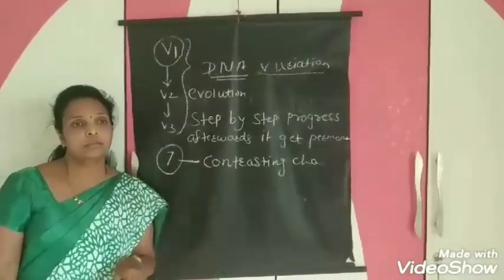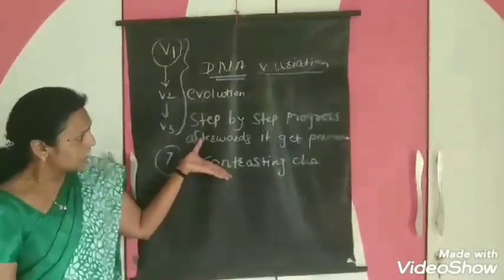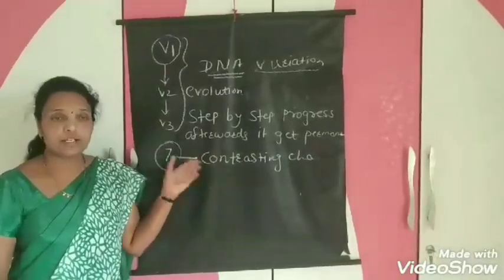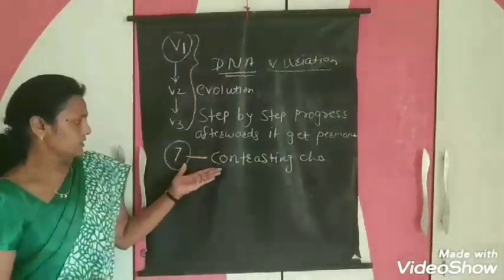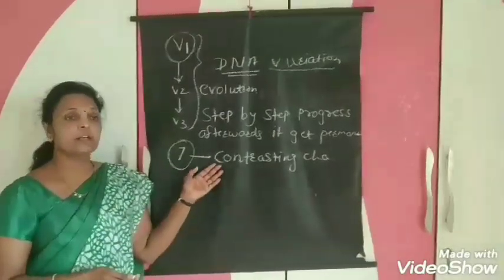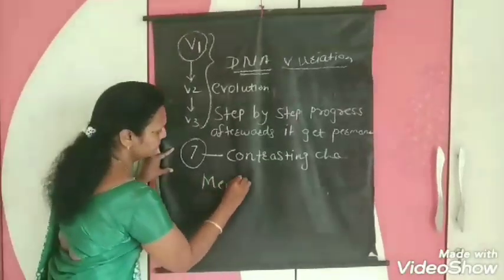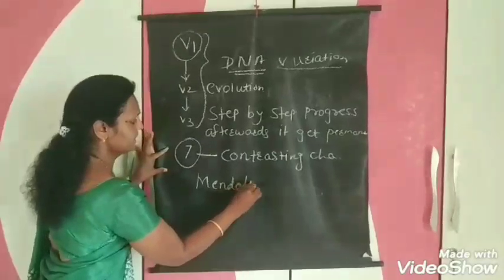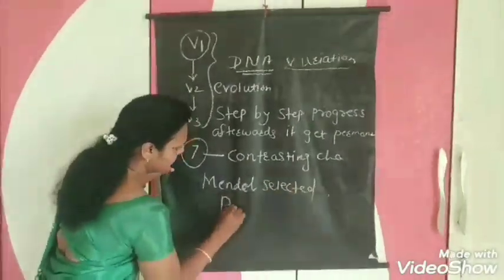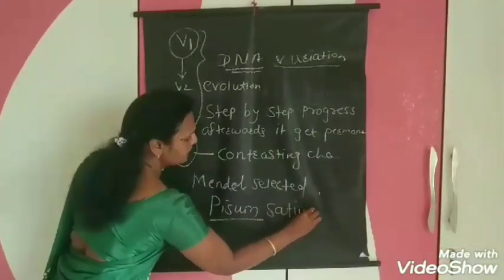One major important characteristic of Pisum sativum is that its life span is very short. So in a short time, we can study more generations of this plant. For that purpose, Mendel selected Pisum sativum, which we also call the pea plant.